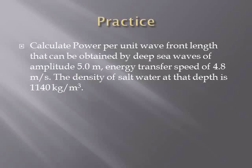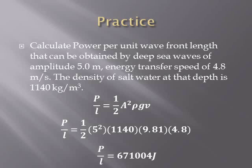Here is a sample problem with waves. We want to calculate the power per unit length with amplitude 5.0 meters, energy transfer speed 4.8 m/s, and the density of salt water is 1140 kg/m³. We use our equation P/l = (1/2)A²ρgv, plug in the numbers, and we get an answer of 671,004 joules per meter.